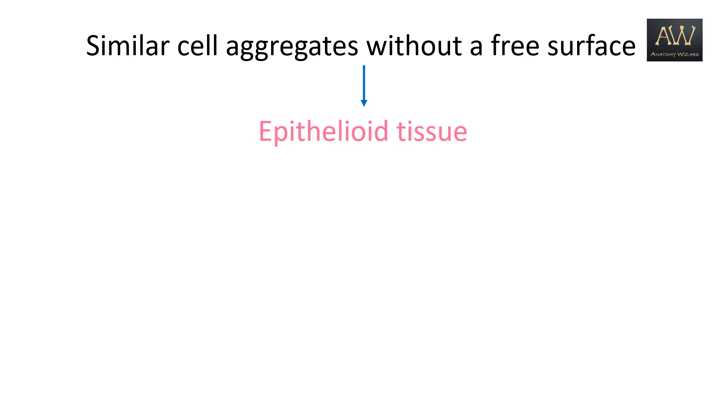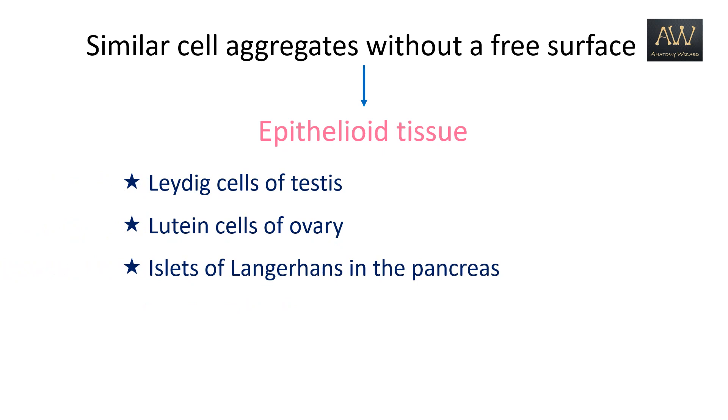The common sites of occurrence of epitheloid tissues or epitheloid cells are Leedic cells of the testis, lutein cells of ovary, islets of Langerhans in the pancreas, adrenal gland parenchyma, and the anterior lobe of pituitary gland.